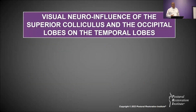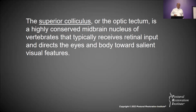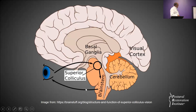I'll start this webinar by talking about the visual neuro influence of the superior colliculus and the occipital lobes on the temporal lobes. The superior colliculus, also called the optic tectum, is a highly conserved midbrain nucleus of vertebrates that typically receives retinal input and directs the eyes and the body toward salient visual features. We operatively move with this midbrain nucleus. Looking at the illustration, it's smack in the middle of the midbrain — your basal ganglia lays above it and the entire brainstem feeds it from below.